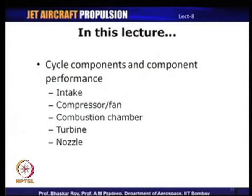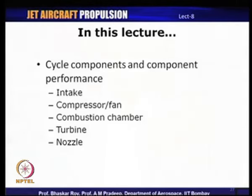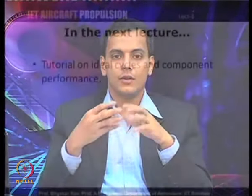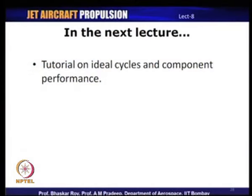In summary, today's lecture was devoted to examining the different components of a gas turbine engine and evaluating their performance by defining pressure losses and efficiencies for the intake, compressor/fan, combustion chamber, turbine, nozzle, afterburner, and mechanical transmission. The next lecture will be a tutorial covering ideal cycle analysis and how to apply these component performance parameters to solve problems on these topics.